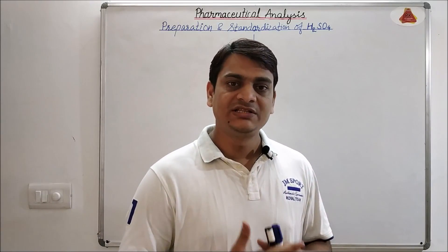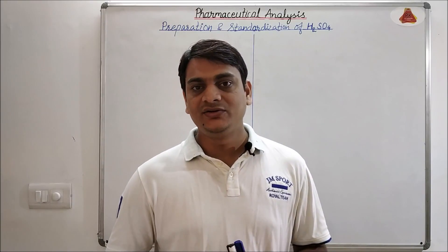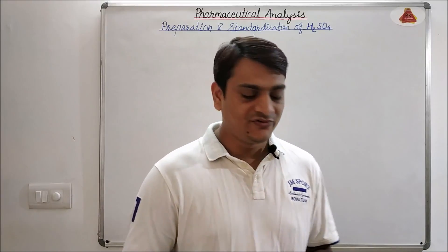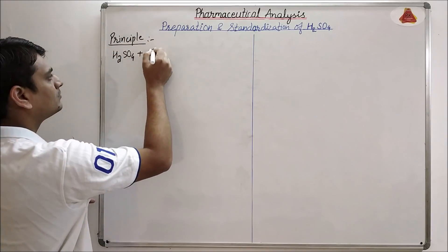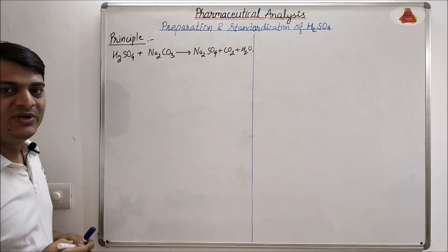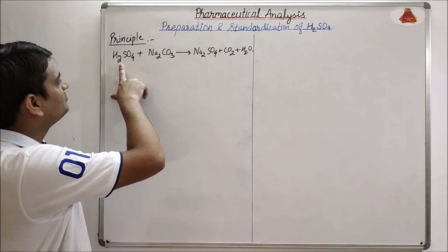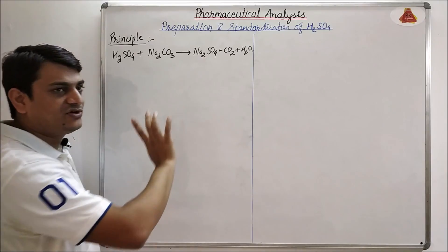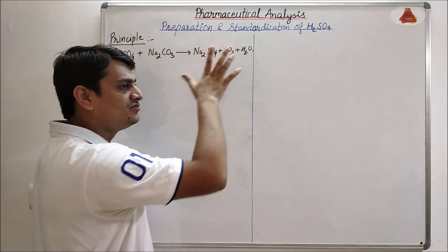Here I will discuss the principle of H2SO4 standardization. H2SO4 will react with Na2CO3 and it will produce Na2SO4 salt. This is the basic principle involved — H2SO4 reacts with Na2CO3 to produce Na2SO4 salt, along with 1 mole of CO2 and 1 mole of H2O.